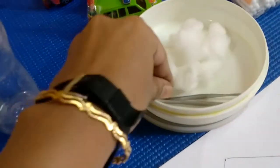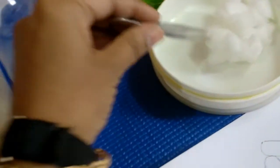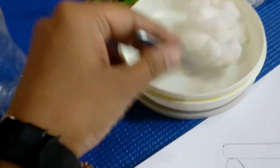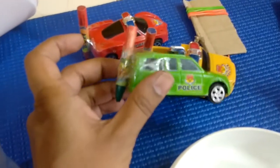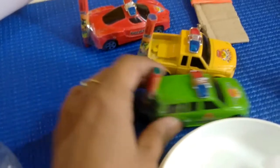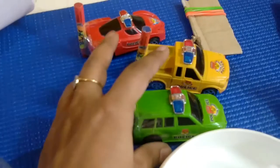These are tweezers and cotton balls. The activity is to use the tweezer and separate out the cotton balls. I have taped crayons onto the cars, and the activity is to use the cars and do some kind of drawing.